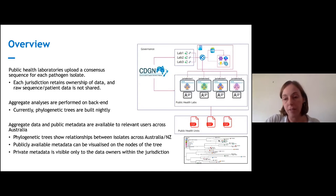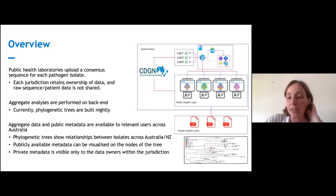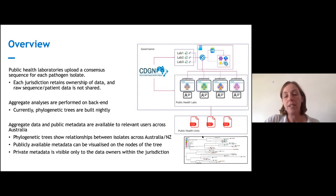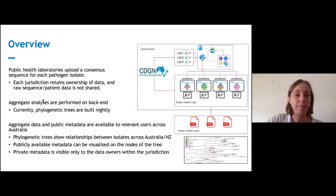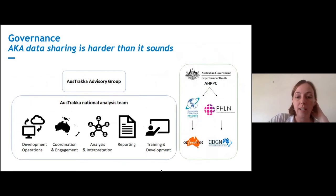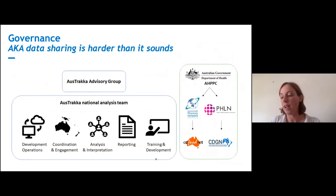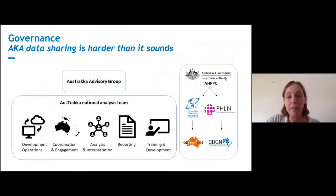We can put different metadata onto the nodes of the tree for people to see, letting them search the tree and colour by nodes. These views are used to generate reports which inform policy decision making around Australia. A little bit about governance — OzTracker is not just a platform and not just an IT solution. It is a network of people, best practices, data sharing, and data sharing agreements. That's perhaps the most important part of it. This was a long time coming; it's been a big effort to set up a structure in which people can share data across state boundaries, involving many levels of government.